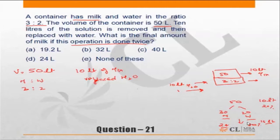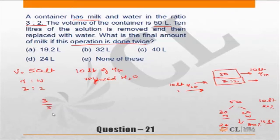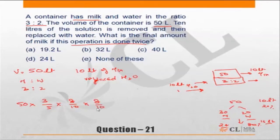After removing 10 liters you add water, which increases the water quantity. The second time you do the same thing, you again remove 80% of the mixture. So every time you are removing 20% of milk, or leaving behind 80% of milk. Originally the mixture has 3 out of 5 as milk, out of a total of 50 liters. After the first operation, 8/10 of the milk is retained; after the second operation, another 8/10 is retained.